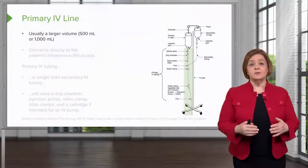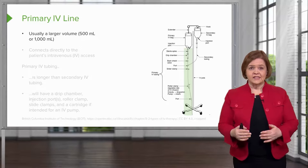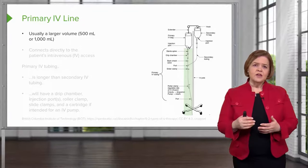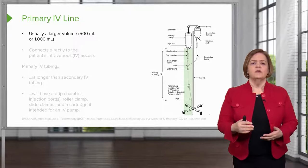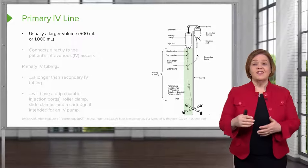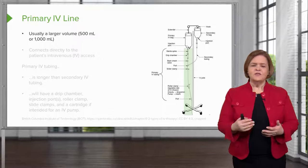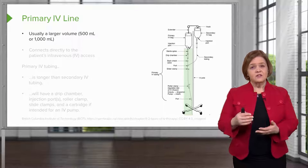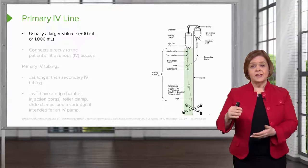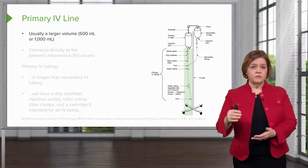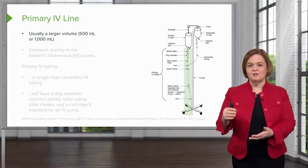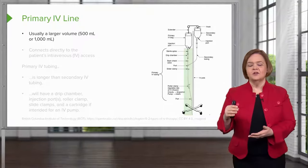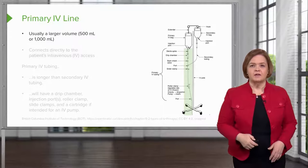Let's start with the IV itself first. There's a primary line and a secondary line. The fluid that we hang on a primary line is usually a larger volume — 500 milliliters or 1,000 milliliters. To give you a frame of reference, a 1,000 milliliter IV bag is exactly half the volume of a 2-liter bottle of pop.